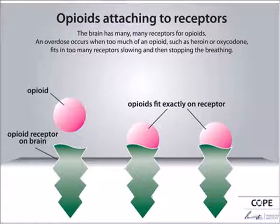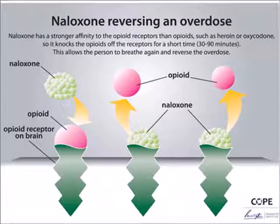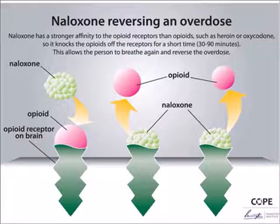Regarding how naloxone interacts with opioids: earlier we saw opioids attaching and occupying certain receptors in the brain, eventually leading to overdose. When naloxone is administered, it goes into the receptor, kicks the opioid off the receptor, and occupies that receptor instead — that is the antagonist quality. It has a stronger affinity to these receptors than opioids do, so it goes in, kicks the opioids off, and blocks them from reattaching for a certain amount of time, which is what actually reverses somebody's overdose and revives them.